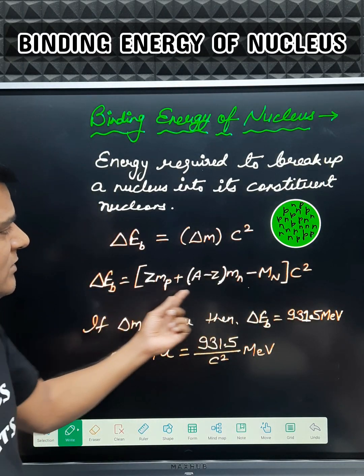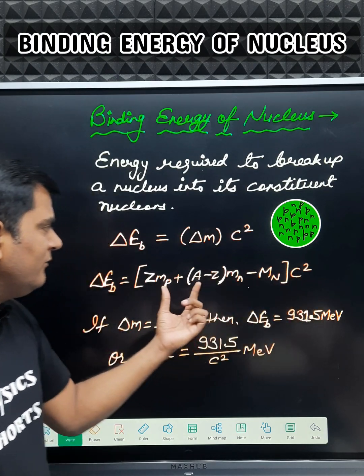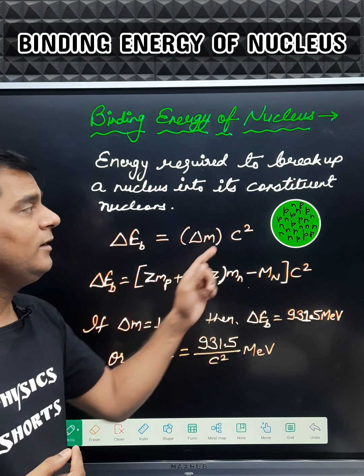So when we substitute this value and multiply with c squared, then we get this binding energy or total binding energy of a nucleus.